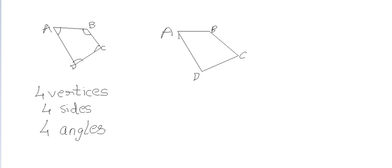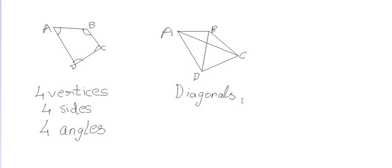Now let's draw lines from A to C and B to D. These 2 line segments join the opposite corners of the quadrilateral and are called its diagonals. So a quadrilateral has 2 diagonals.